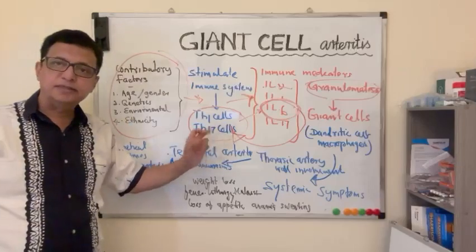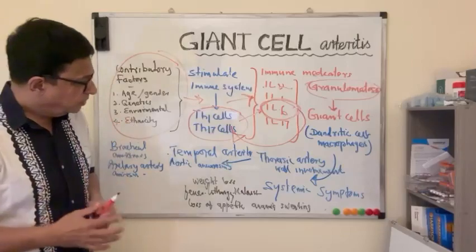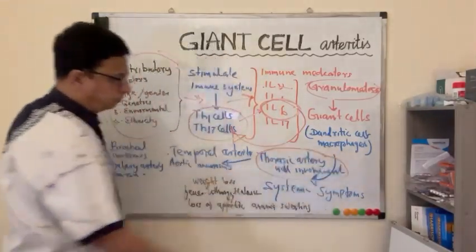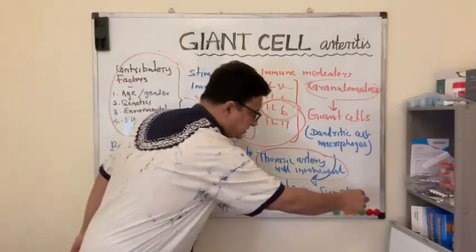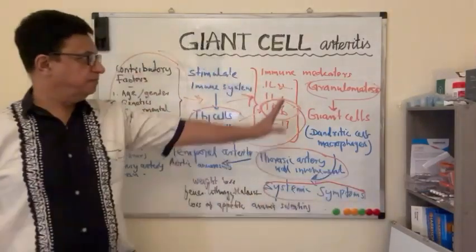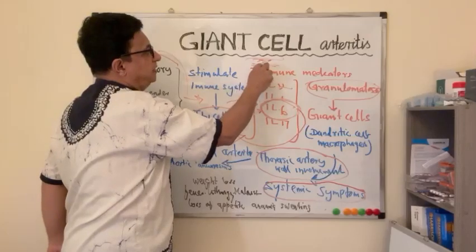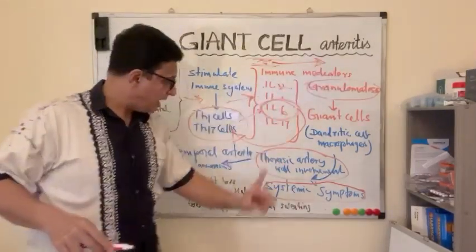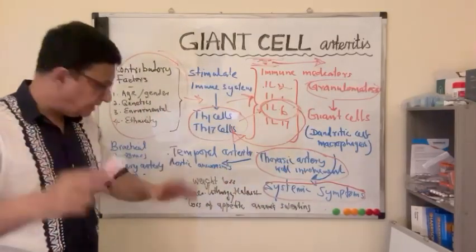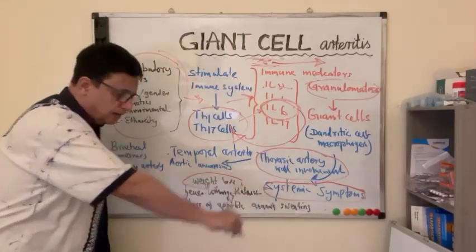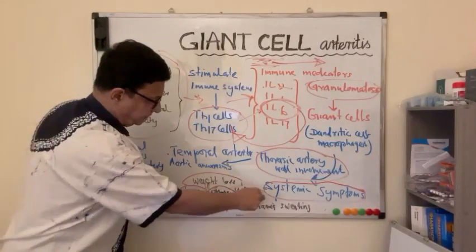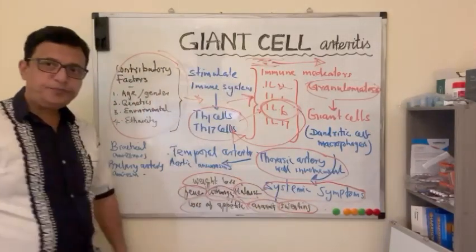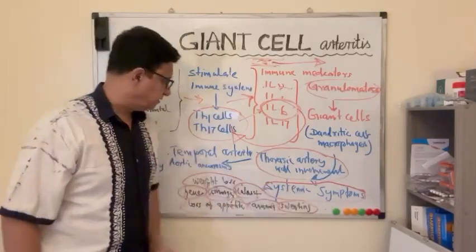As a result of this giant cell infiltration, we get abnormalities of the thoracic arterial walls and also symptoms of systemic involvement. Because when the artery wall is affected and immune mediators are released, these immune mediators run along the whole body through the blood circulation causing generalized symptoms. So Giant Cell Arteritis can present with weight loss, fever, lethargy, malaise, loss of appetite, anemia of chronic disease, sweating, and generalized body ache.